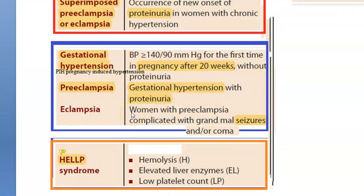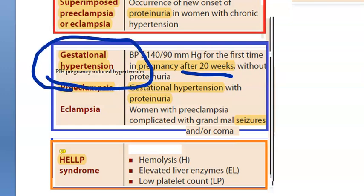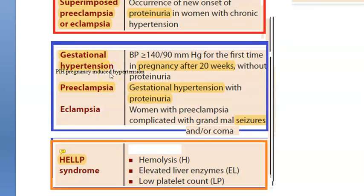This blue box represents a lady with no prior history of hypertension. She develops hypertension for the first time after 20 weeks of pregnancy — this is called pregnancy-induced hypertension or gestational hypertension. It is defined as blood pressure greater than or equal to 140/90 mmHg, measured two times six hours apart, after 20 weeks, without proteinuria. If proteinuria is added, it becomes preeclampsia.